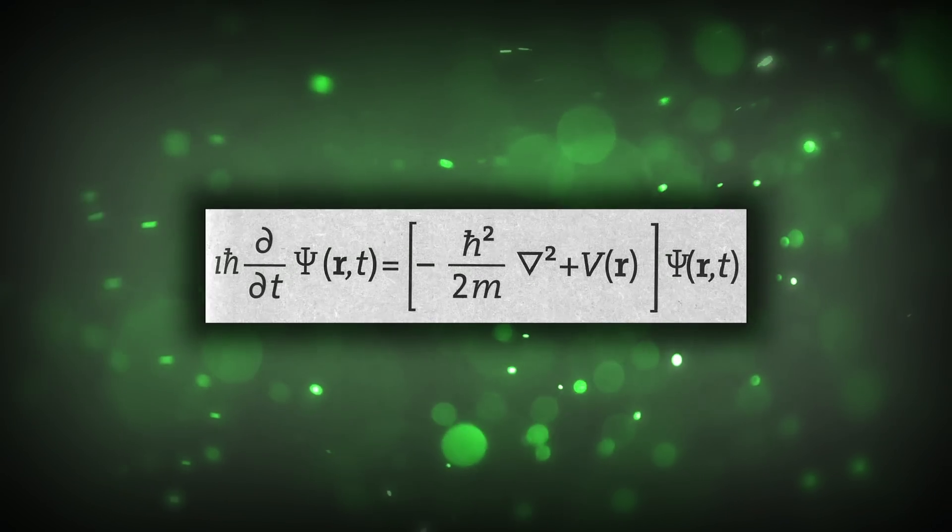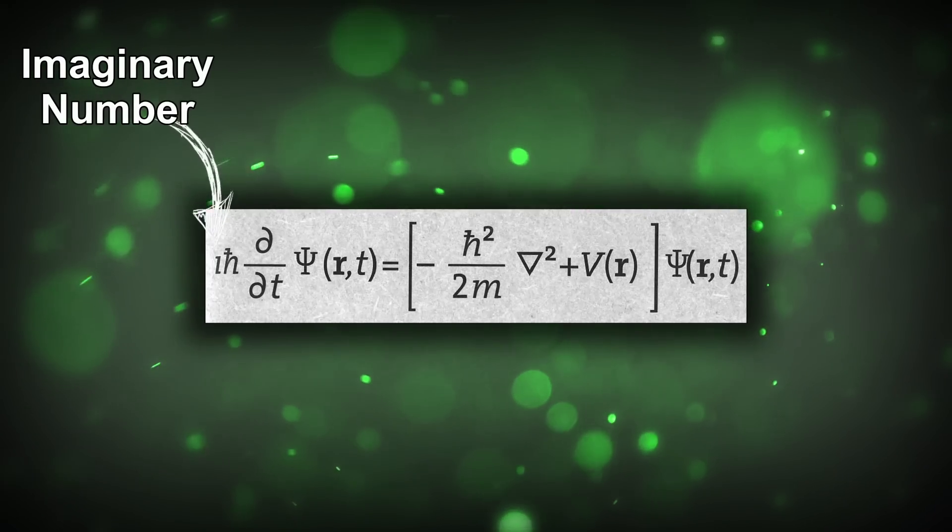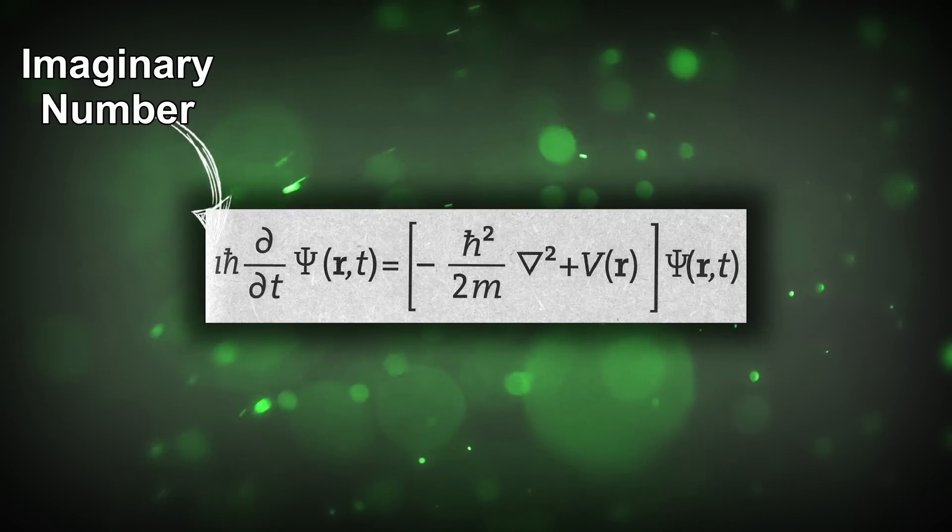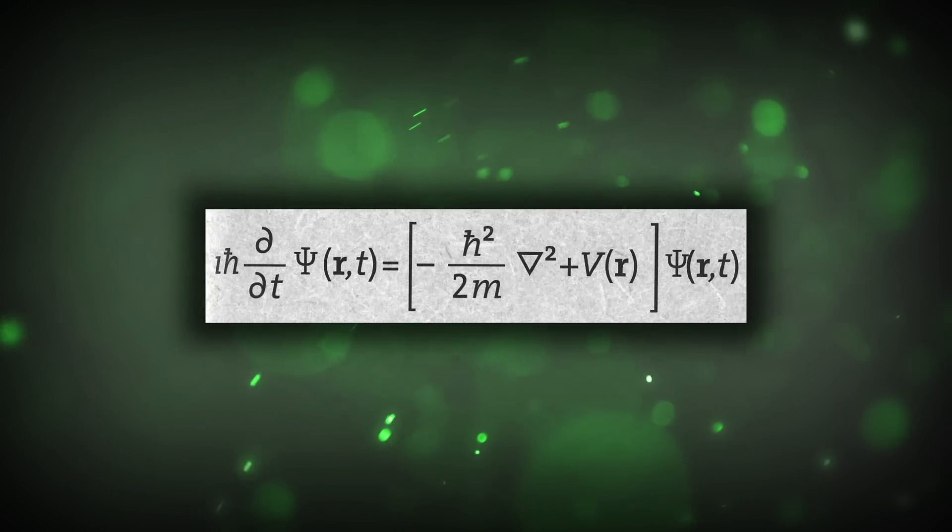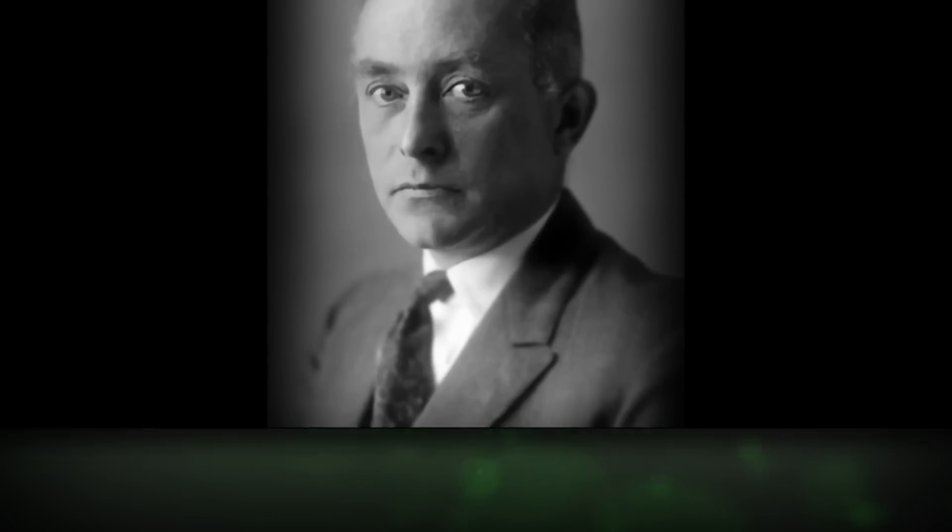Now, the equation that Schrödinger established contained something called imaginary numbers, meaning it couldn't correspond to something that was measurable in the real world. However, this problem was solved by German physicist Max Born, who was another student of Thomson.